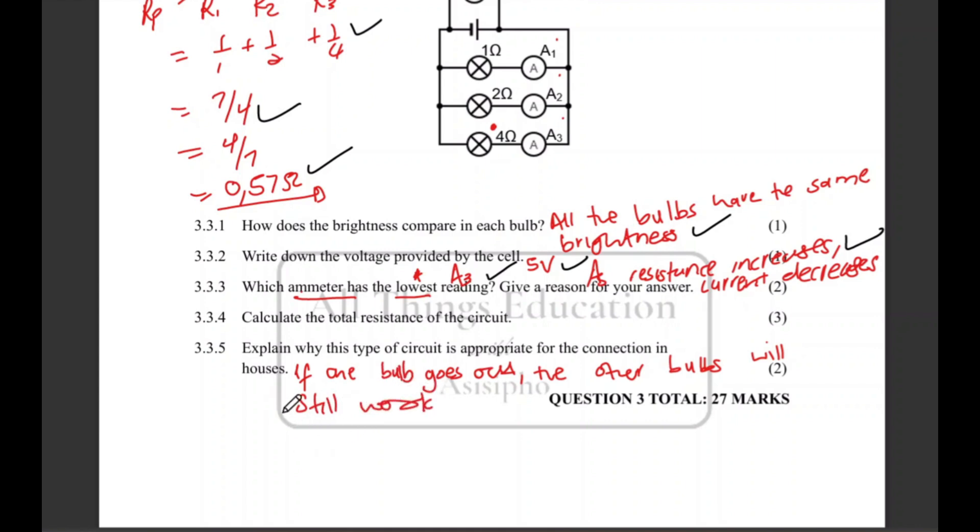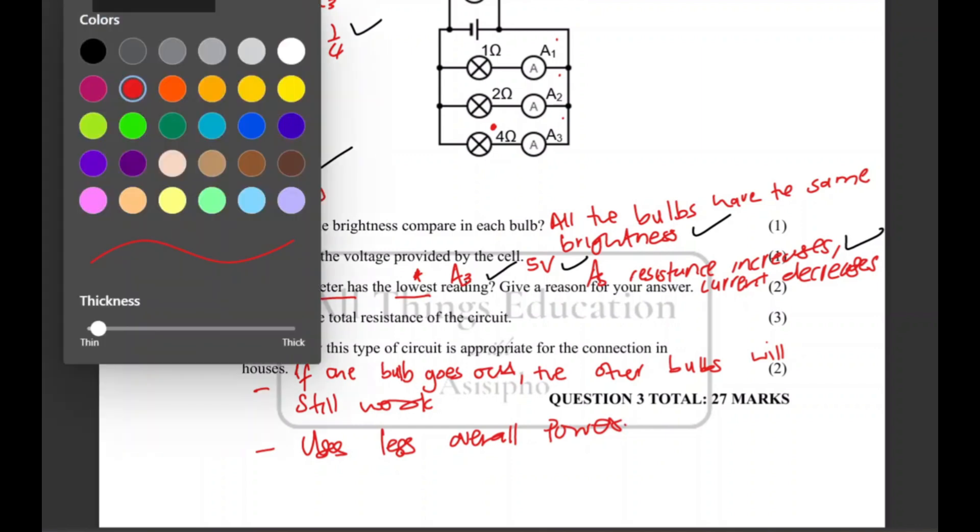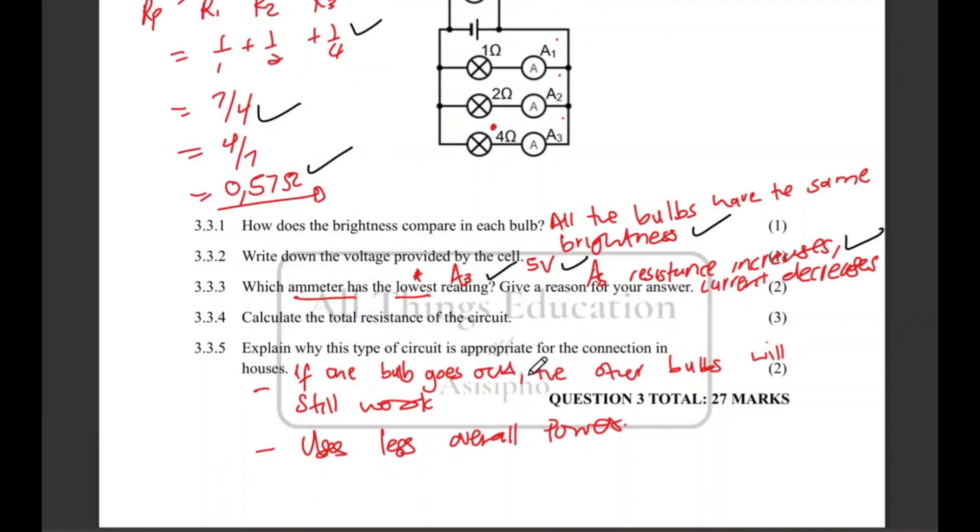Or you could have said because this one uses less overall power. How many marks? Two marks. So if one bulb goes out the other bulbs will still work, or it will just be two marks if you answered it uses less overall power. All the best.